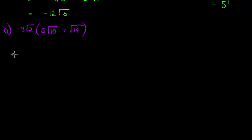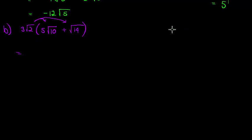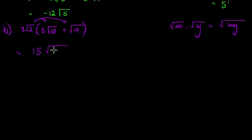Let's look at a slightly more complicated example. We have a bunch of surds with coefficients. If it were an algebraic expression we'd know exactly what to do — distribute the coefficient into the bracket. That's exactly what we do here. When we multiply roots we can multiply the interiors: the square root of x times the square root of y becomes the square root of xy. So 3 times √5 gives √15, 2 times √10 gives √20, and 3 times √14 gives √52.